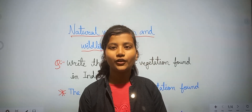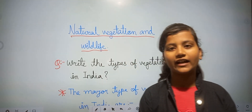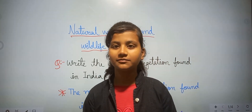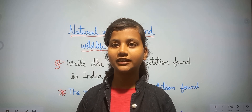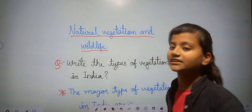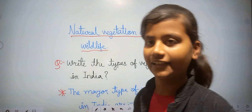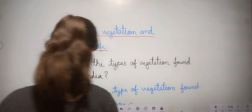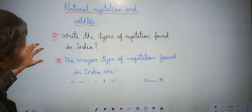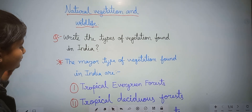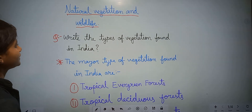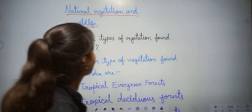Hello everyone, how are you? I hope that you all are fine. In this video we will discuss some questions related to this chapter: natural vegetation and wildlife. So let's discuss some questions. The first question is: write the types of vegetation found in India.